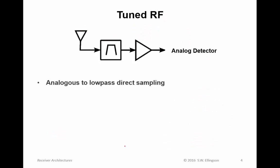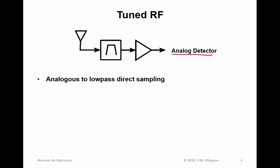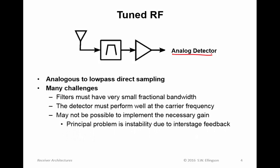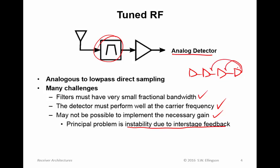Tuned RF is basically the analog version of low-pass direct sampling — you see an analog detector instead of a digitizer. There are many challenges in tuned RF architecture, so it's not very commonly used. For example, filters must have very small fractional bandwidth and provide all the selectivity required at the RF frequency. The detector has to perform well at RF frequency, whereas most analog AM and FM detectors work much better at lower frequencies. Furthermore, it may not be possible to implement the necessary gain due to instability from interstage feedback — having 50 to 110 dB of gain all at the same frequency is a challenge and perhaps an insurmountable one.